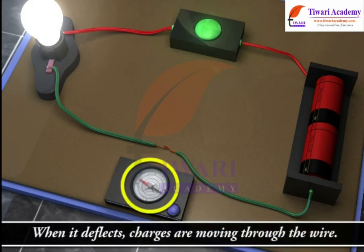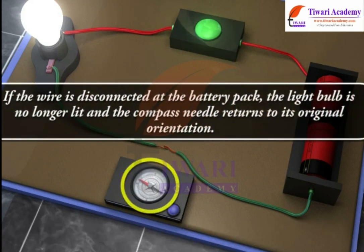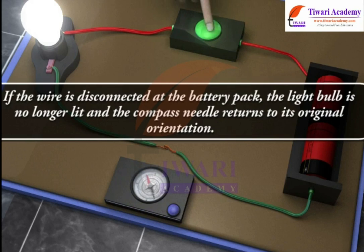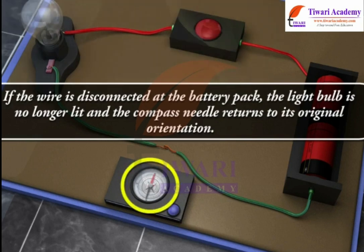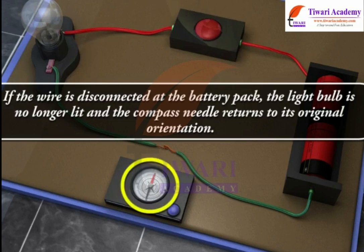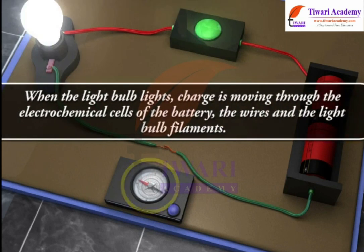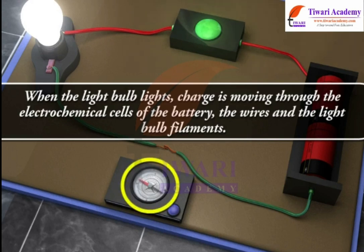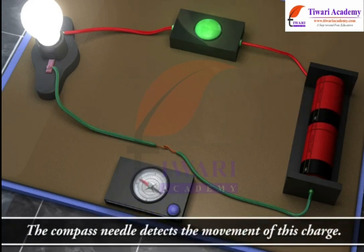When the needle deflects, charges are moving through the wire. And if the wire is disconnected at the battery pack, the light bulb is no longer lit and the compass needle returns to its original orientation. When the light bulb lights, charge is moving through the electrochemical cells of the battery, the wires and the light bulb filaments. The compass needle detects the movement of this charge.